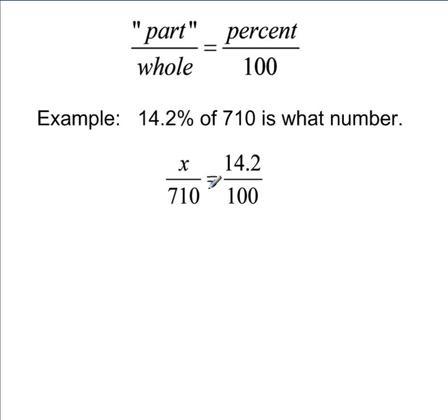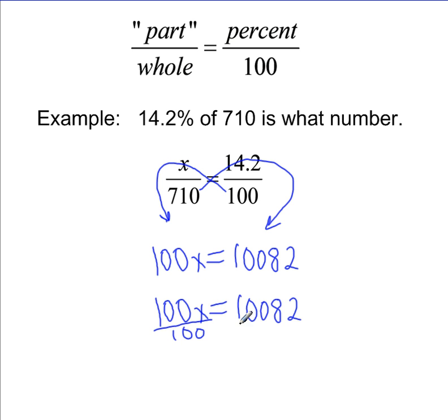We're going to take 710 times 14.2 and 100 times x to get a new equation. Let me go ahead and do that calculation now. When I cross multiply, I get 100x equals 10,082. Since this is 100 times x, the inverse operation is division by 100. I'm going to divide both sides by 100, which is very easy. So I'm dividing both sides by 100 and I get an answer of x equals 100.82.